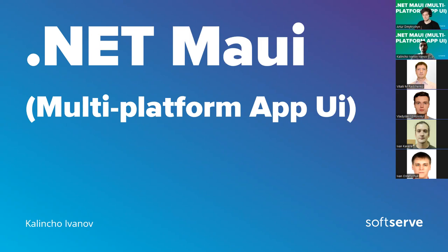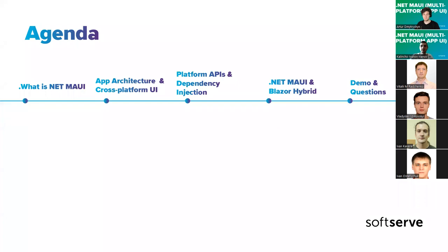Today I will try to give you the big picture so you can consider whether to try this technology for an idea of yours, or try something else. Today's presentation will cover a couple of topics: the definition behind .NET MAUI, the app architecture, cross-platform UI features, some specific platform APIs, dependency injection in .NET MAUI, and the .NET MAUI and Blazor hybrid. We'll cover their connection because it's really interesting and gives us a lot of rich choices. At the end, I'll show you a quick demo of how the initial project structure looks like and some of its features.